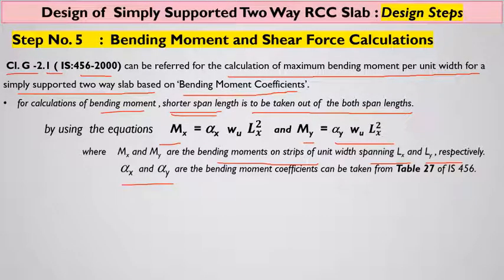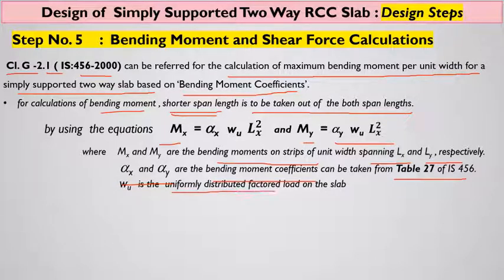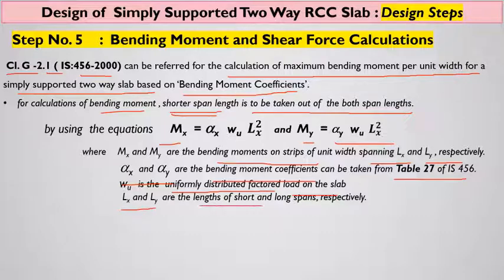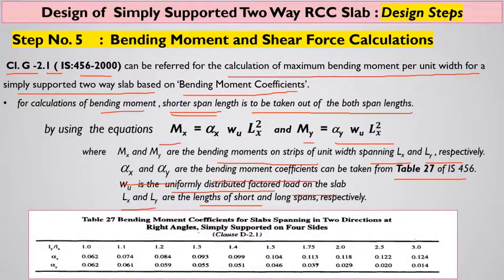Here, αx and αy are the bending moment coefficients from Table 27 of IS 456. wu is the uniformly distributed factored load on the slab calculated in Step 4. Lx and Ly are the lengths of the short and longer spans, respectively.